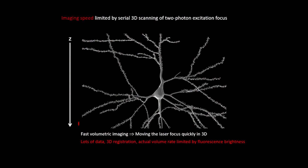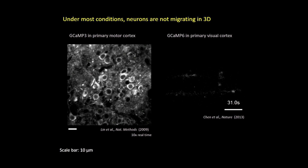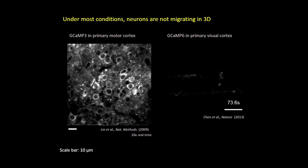When confronted with this problem, we asked ourselves: is this traditional approach of scanning the focus in 3D absolutely necessary? Before giving the answer, consider what you see here — neurons in the brain. You can see individual circles, which are the cell bodies of individual neurons, and dendritic spines of a single neuron. There are flashes of fluorescence intensity change, telling you that neurons are becoming active.